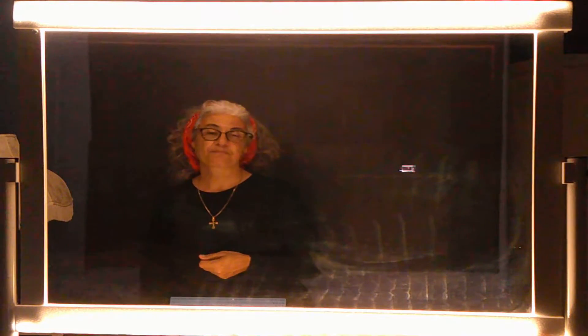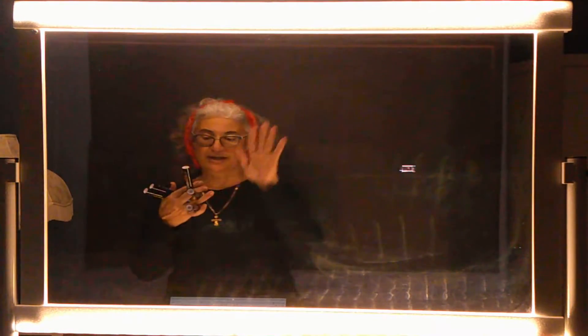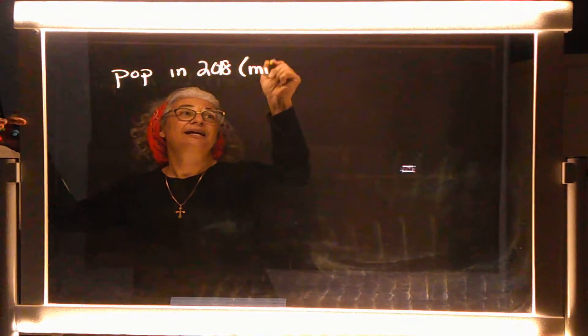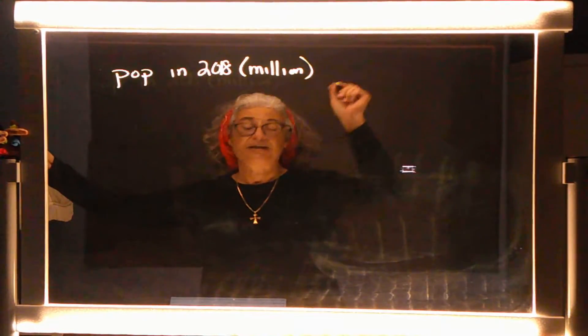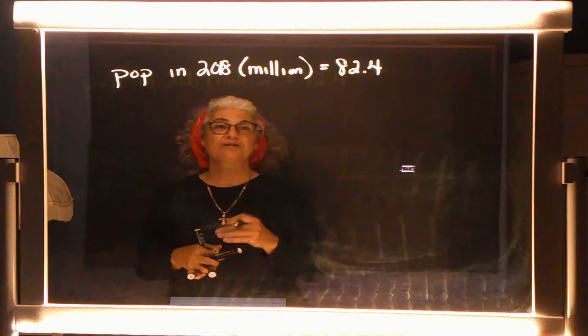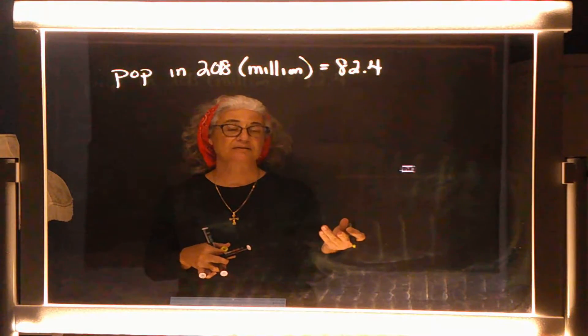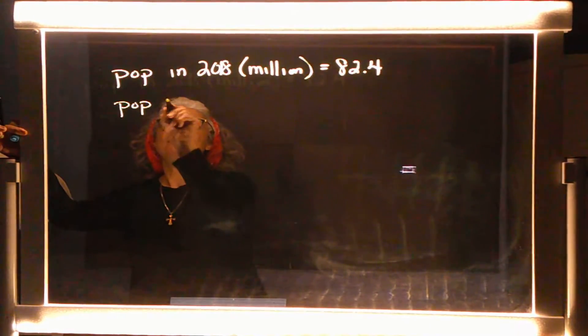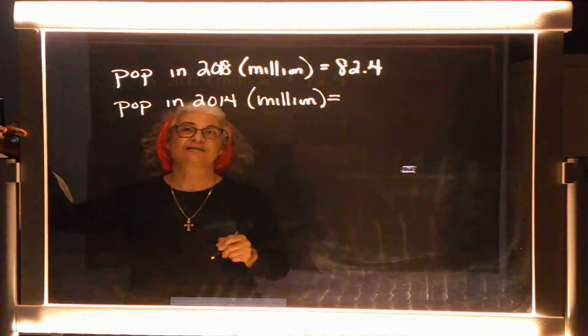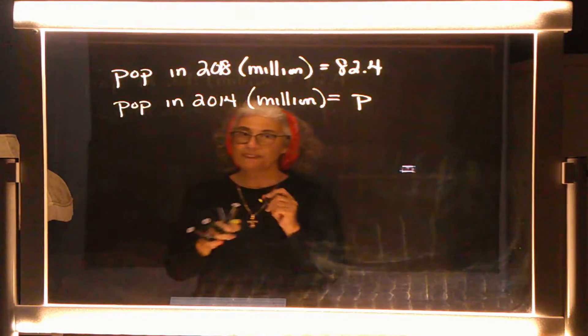The next problem tells us the population of a country in 2018 and asks us to find the population in 2014. Writing down the information: population in 2018 was 82.4 million — again, they wrote the word 'million' instead of all the zeros. We're looking for the population in 2014, which we don't know, so we'll call it P.